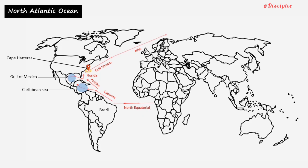From the North Atlantic, it fans out in three directions: eastwards to Britain, northwards to the Arctic, and southwards along the Iberian coast as the cool Canaris current.